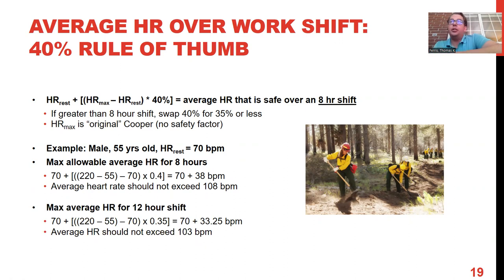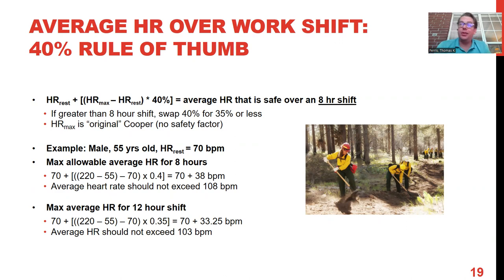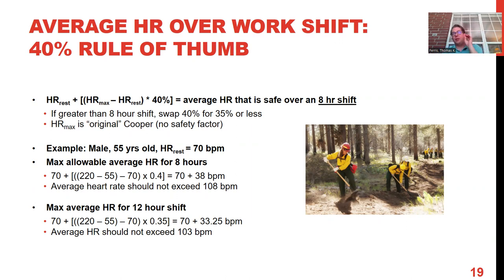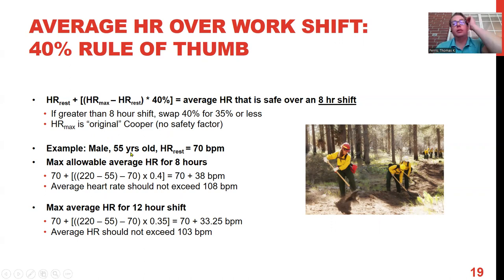Going from an eight-hour to a 12-hour shift, we want to be even more careful, so we reduce the factor to 35%. For this class: eight-hour shift uses 40%, 12-hour shift uses 35%. So for the same worker on a 12-hour shift, we don't want the average heart rate to exceed 103 beats per minute.